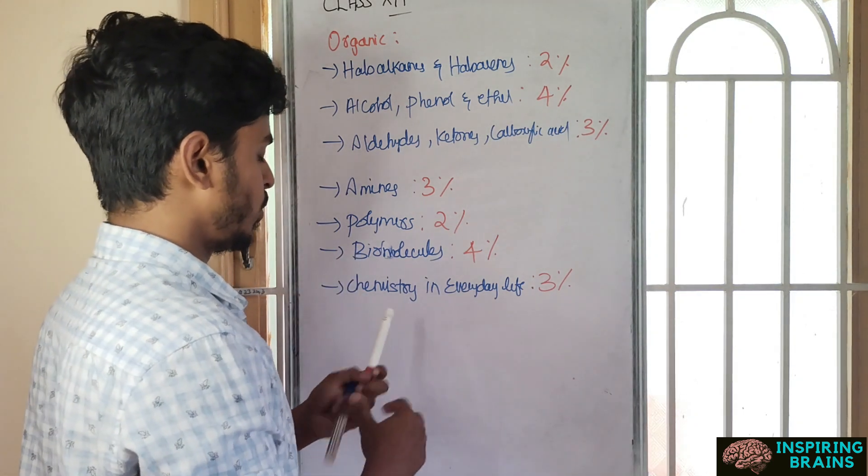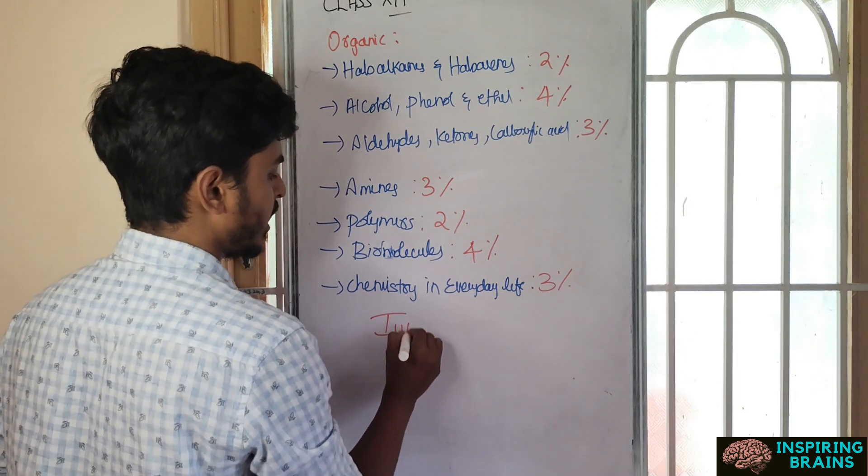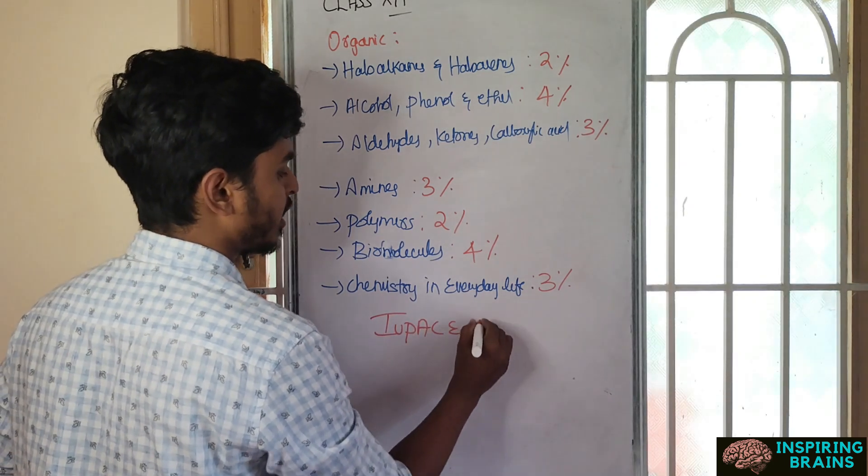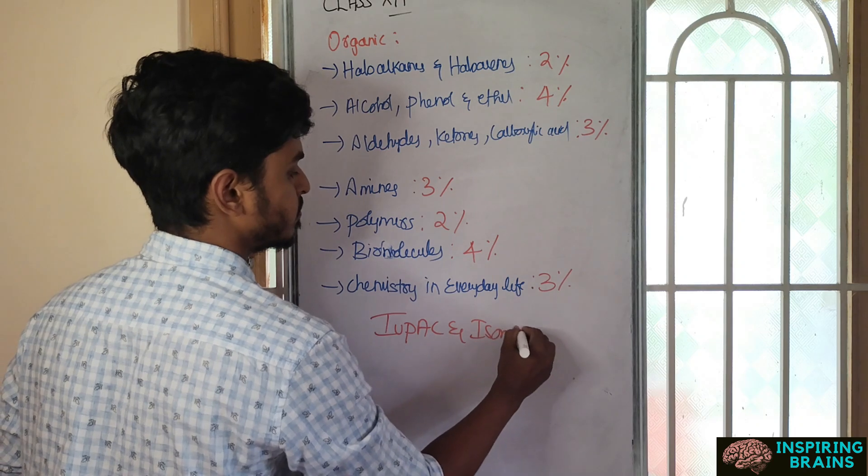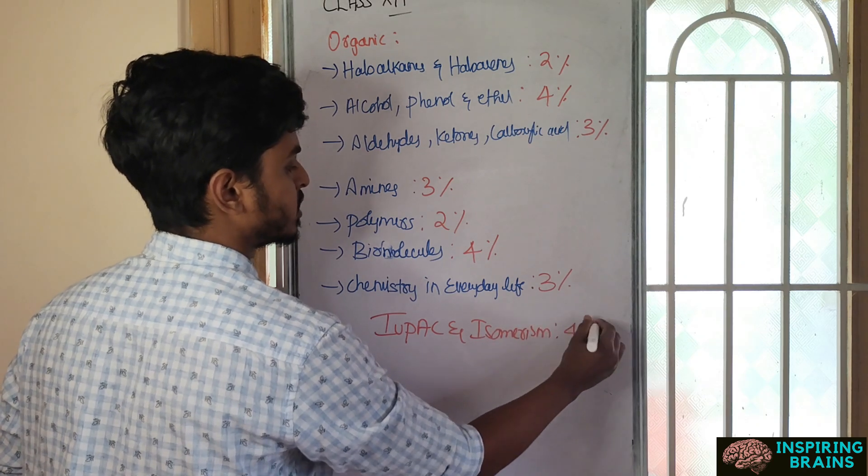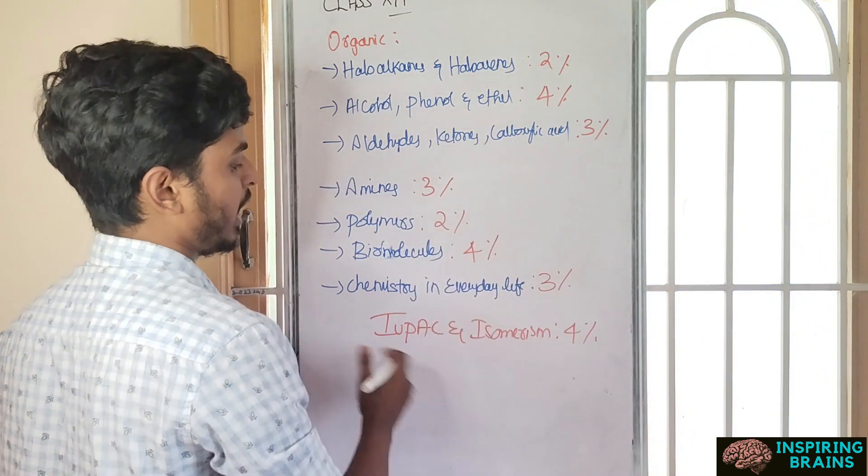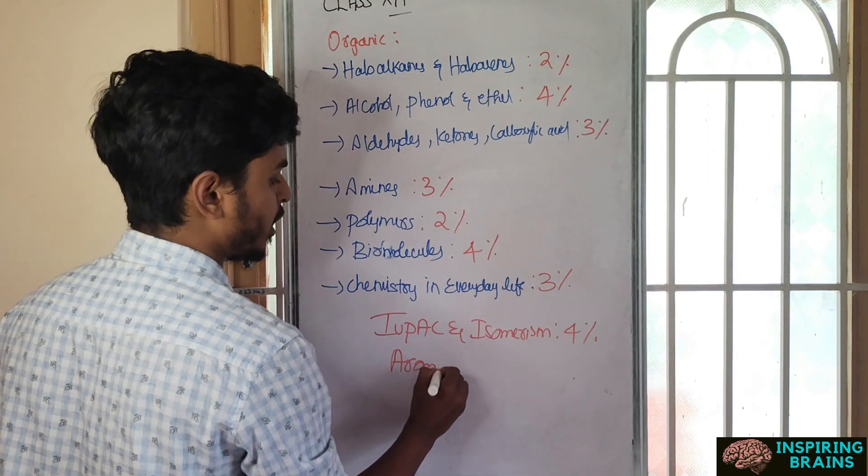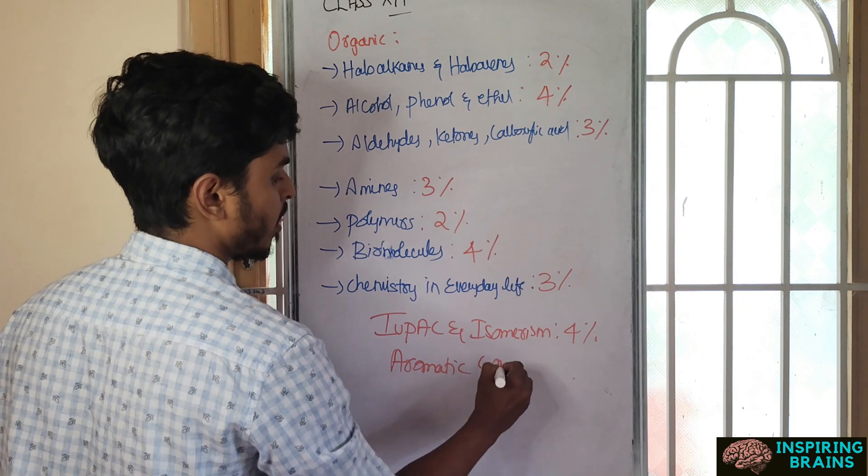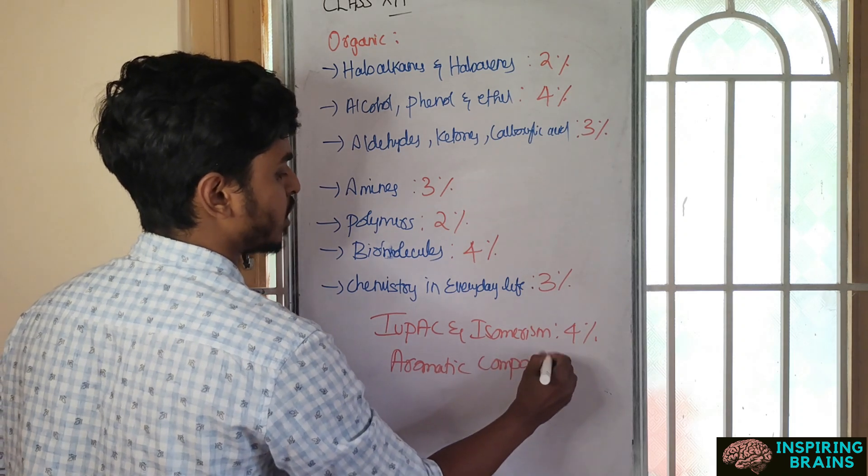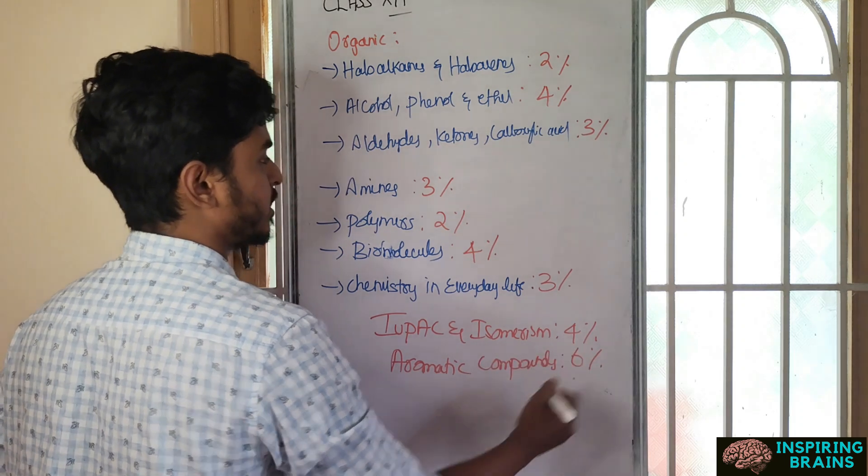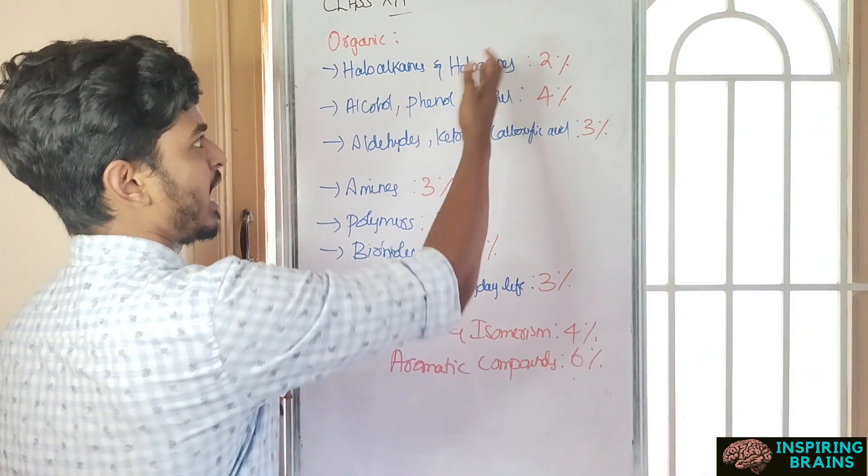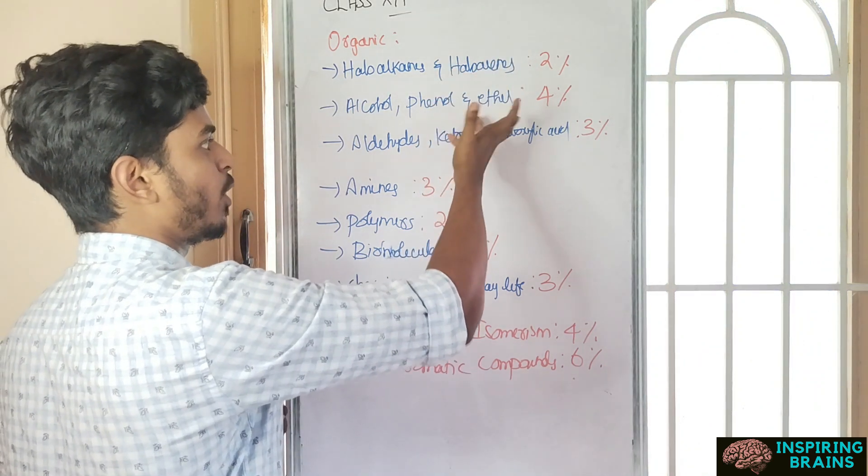Other than this, they are giving more preference to IUPAC and isomerism for 4 percentage. This may come in any unit, any IUPAC name, any isomerism. Next is aromatic compounds - special preference to aromatic compounds for 6 percentage. These are haloarenes, aromatic phenol, and so on.